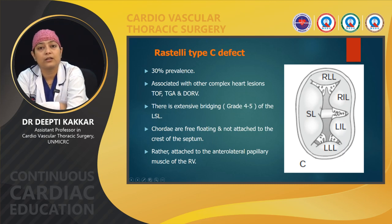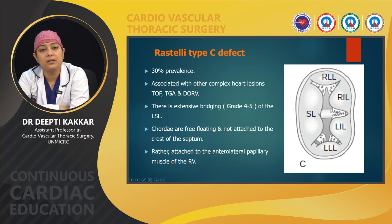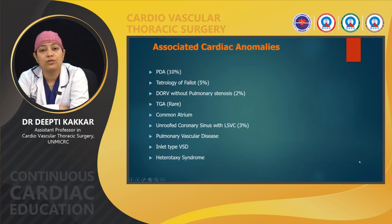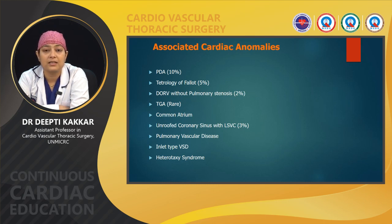There are multiple cardiac anomalies that may be associated with AVCD. Most commonly it is associated with patent ductus arteriosus, tetralogy of Fallot, DORV with pulmonary stenosis, TGA, common atrium, unroofed coronary sinus with left SVC, pulmonary vascular disease, large inlet-type VSD, and heterotaxy syndromes.